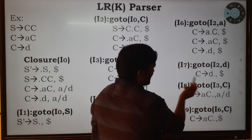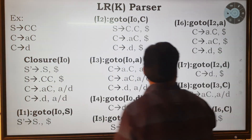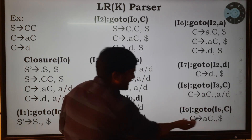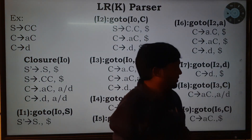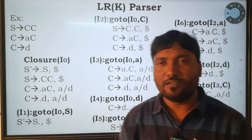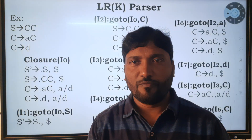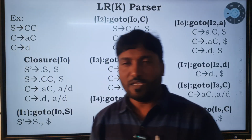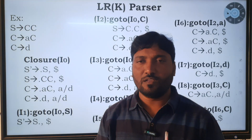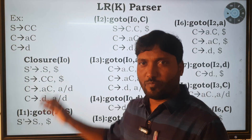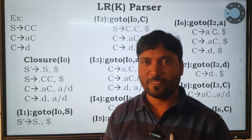i7, i8, and i9 have no symbols after the dot. This is how to calculate the canonical set of items with lookahead symbols for the LR(1) parser. Next, we are going to construct the LR(1) parser table with the help of this canonical set of items.